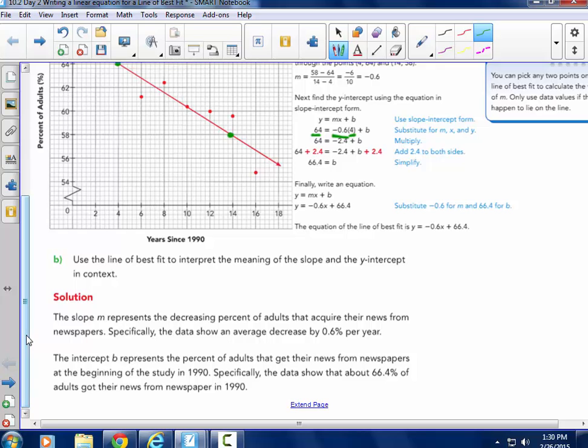The intercept b represents the percent of adults that get their news from newspapers at the beginning of this study back in 1990. Specifically, the data show that about 66.4% of adults got their news from newspapers. That wasn't too long ago, 66 percent.